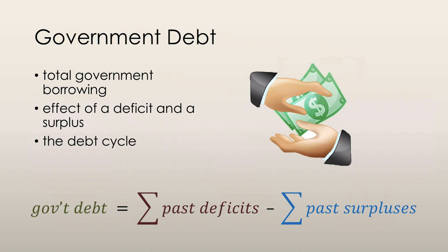When individuals and firms incur debt, it is generally to finance the purchase of some form of capital that yields some sort of rate of return. When governments incur debt, some government expenditure is generally considered to be investment, generally in the form of public capital.